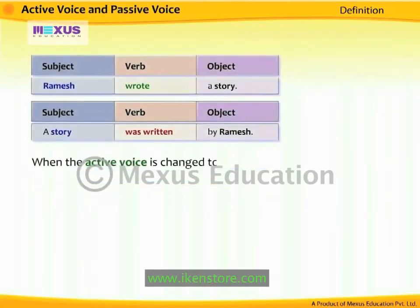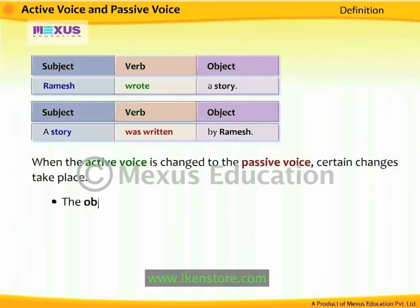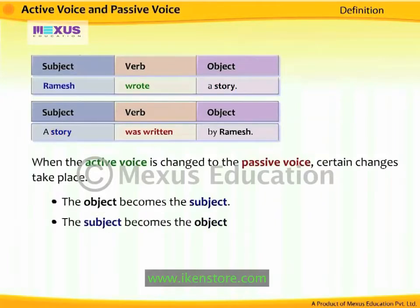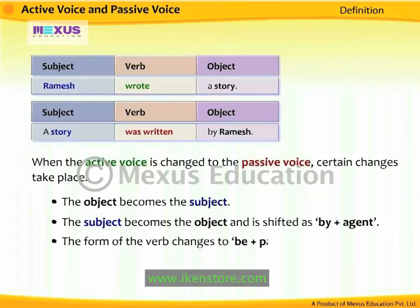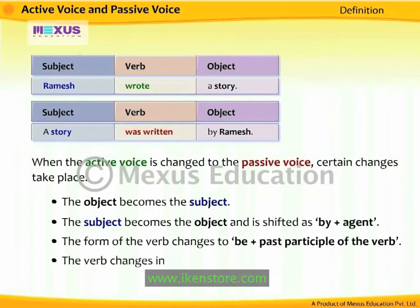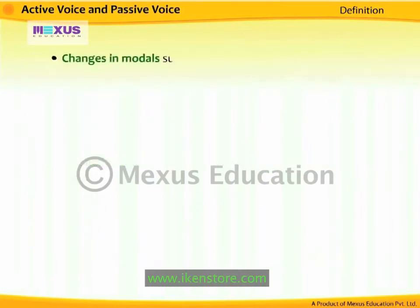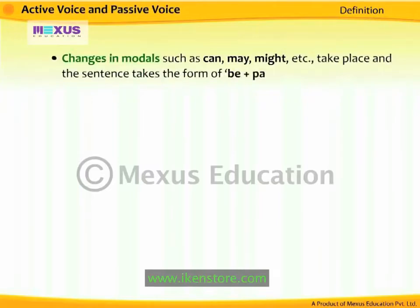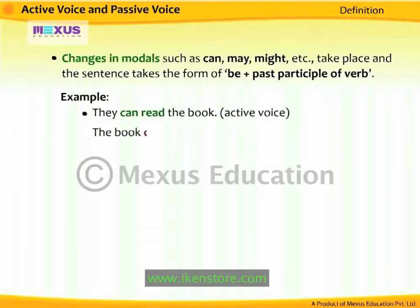When the Active Voice is changed to the Passive Voice, certain changes take place. The object becomes the subject — so 'story' becomes the subject. The subject becomes the object and is shifted as 'by + agent' — so Ramesh becomes 'by Ramesh.' The form of the verb changes to 'be + past participle' — so 'wrote' changes to 'was written.' The verb changes in number to suit the new subject. Changes in modals such as can, may, might, etc. also take place, and the sentence takes the form of 'be + past participle.' For example, 'They can read the book' becomes 'The book can be read by them.'